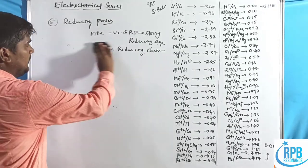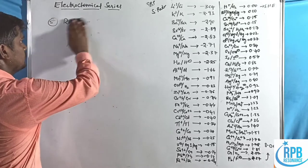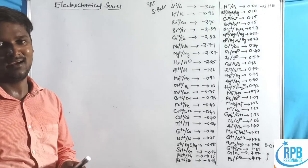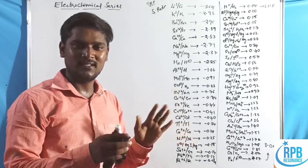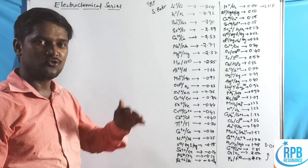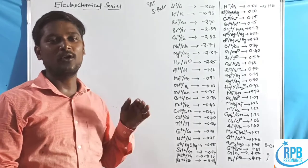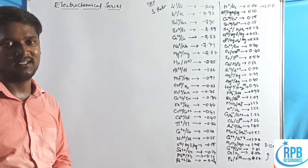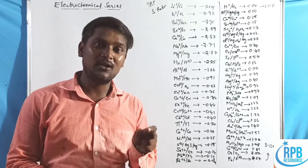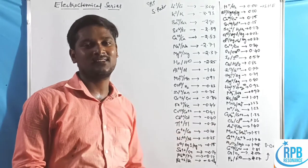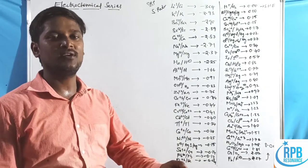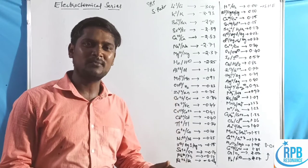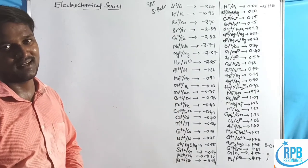Summarizing all six points: (1) Above one is anode in the series. (2) Top to bottom, reactivity decreases. (3) Top to bottom, electropositive character decreases. (4) Displacement: low SRP metals displace high SRP metals; high SRP non-metals displace low SRP non-metals. (5) Top to bottom, reducing character decreases. (6) Top to bottom, oxidizing character increases.